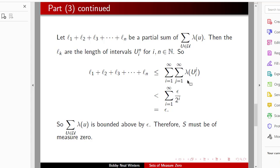So ℓ_1 + ℓ_2 + ... + ℓ_m is less than this double infinite sum where on the outside I vary through i and on the inside I vary through j. This sum is less than epsilon over 2^i because this is covering one of my sets. And then when I add these all up because of a geometric series, this is epsilon.